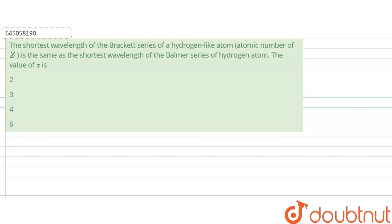Hello, we are given with a question and the question says: the shortest wavelength of bracket series of a hydrogen-like atom, that is atomic number Z, is the same as the shortest wavelength of Balmer series of hydrogen atom. So, the value of Z is what?